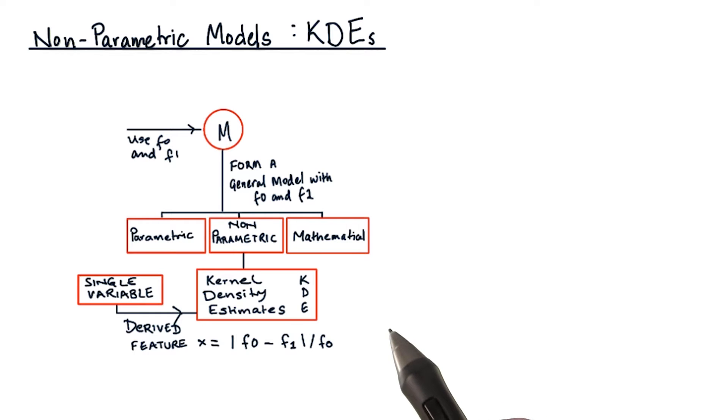As we mentioned before, we are now going to form a kernel density estimate from our model for x. This will formalize the concept of the histogram as a non-parametric model.